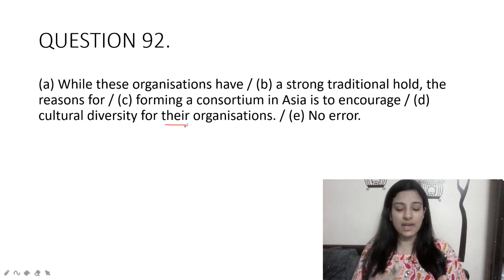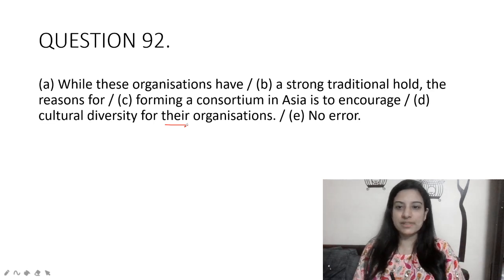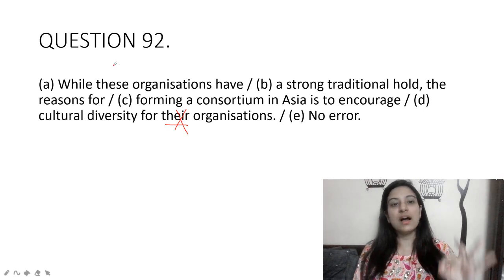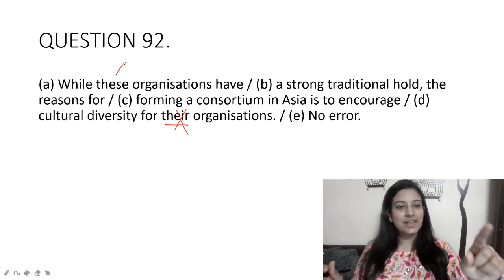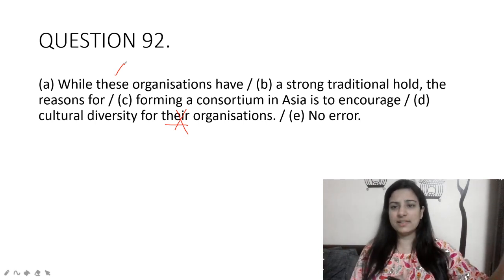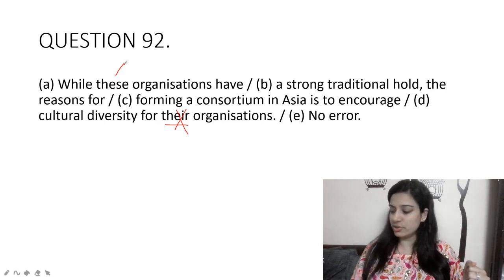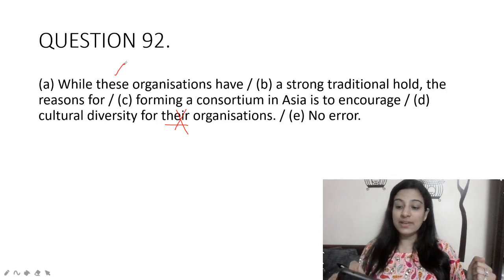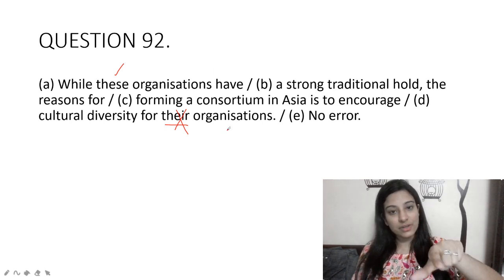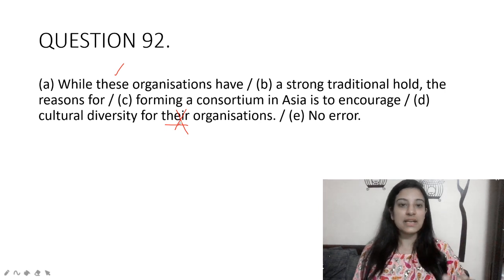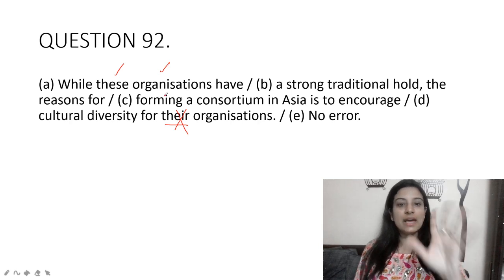Cultural diversity for their organizations — the mistake is in option D because there is a possessive case being implied, but there is no actual possession here. The consortium is formed to encourage these organizations, so no possession exists. You can't use a possessive here — it should be 'these' or no possessive at all.